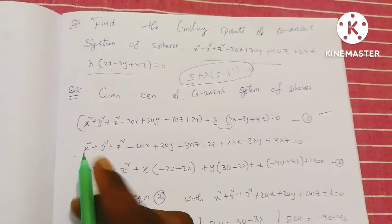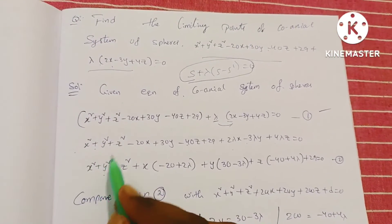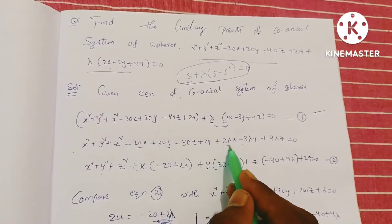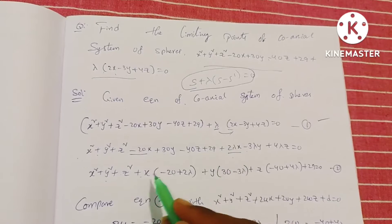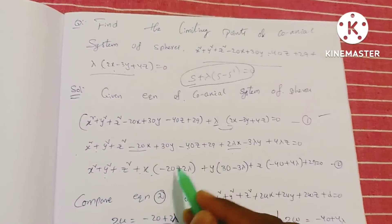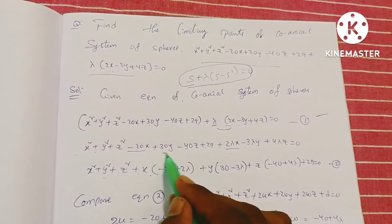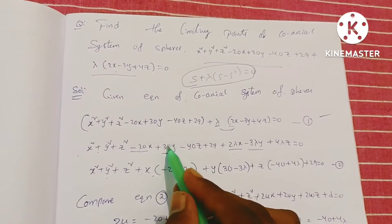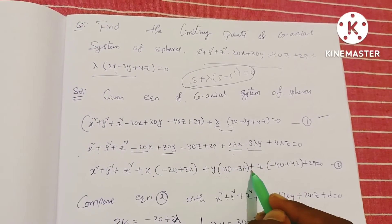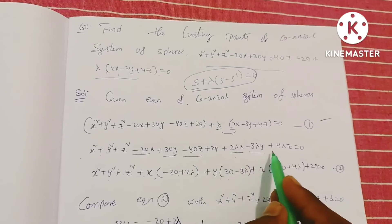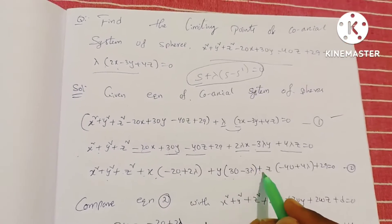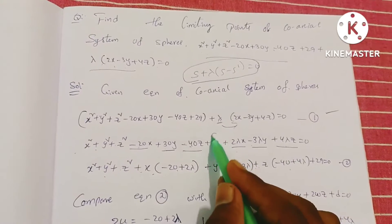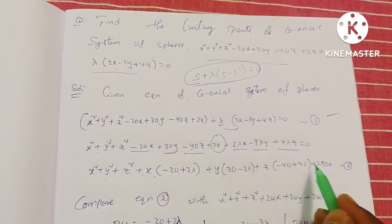Therefore, grouping by variable: x² + y² + z² + (−20 + 2λ)x + (30 − 3λ)y + (−40 + 4λ)z + 29 = 0. Here the constant term is 29.